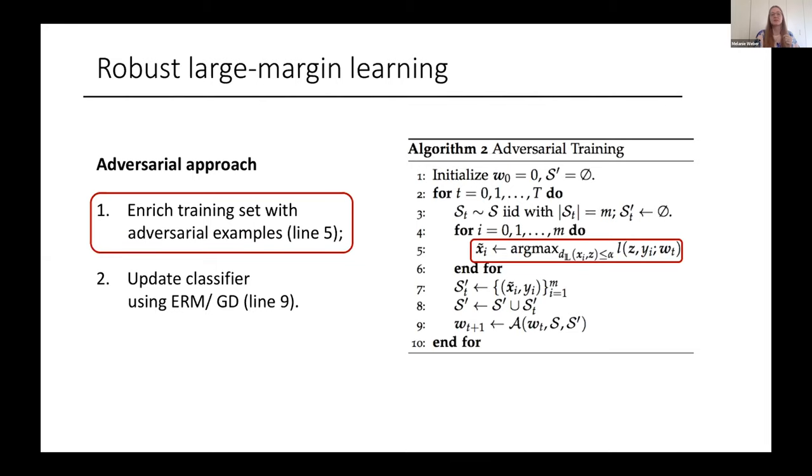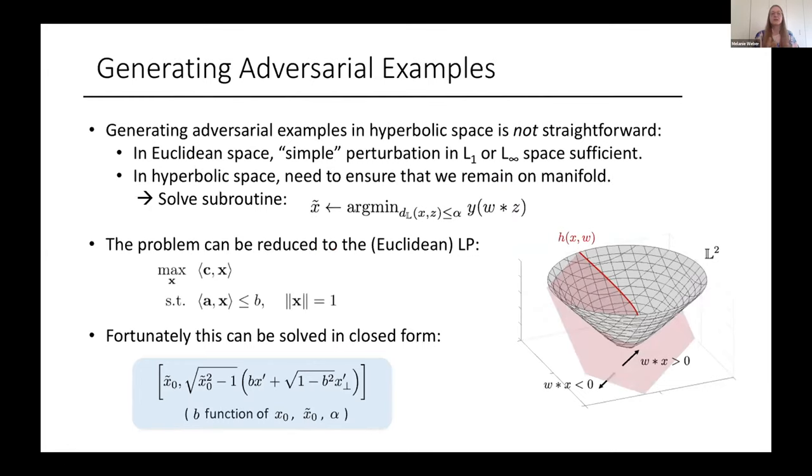So how do we compute adversarial examples in hyperbolic space? As a reminder, in Euclidean space, we would compute a perturbation with respect to the L1 norm or L infinity norm. In hyperbolic space, we have the additional difficulty that we have to ensure that we stay on the manifold. So our line five in the algorithm reduces to subroutine of this form. If we look at that, this is a constrained Riemannian optimization problem. So at first, we would think this is quite hard to solve, especially multiple times in each iteration. But it turns out that we can rewrite the subroutine as a Euclidean linear program. Here A, B, and C look a little more complicated than is written here. But in principle, that's the form of the Euclidean linear program. And then fortunately, this can be solved in closed form. So while originally this looked like a really tough subroutine to solve, this can actually be computed very efficiently.